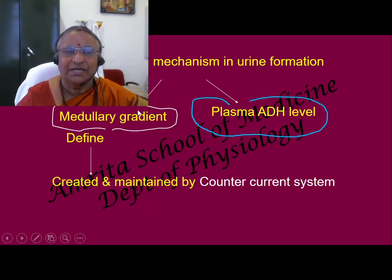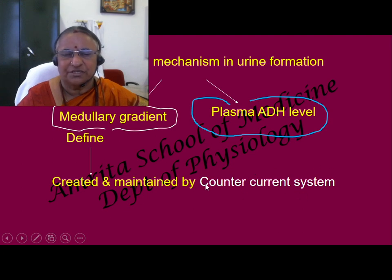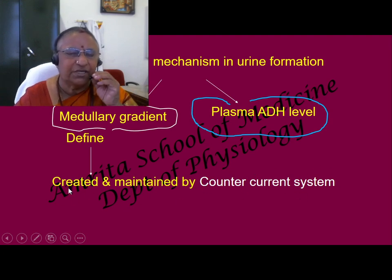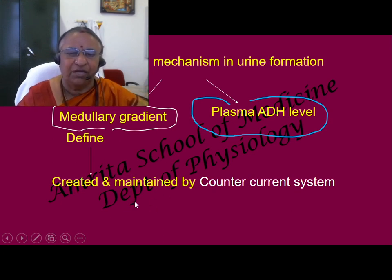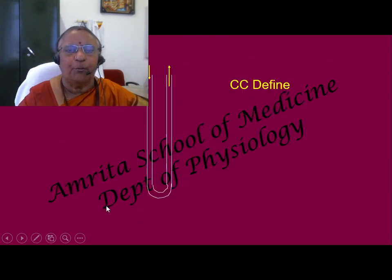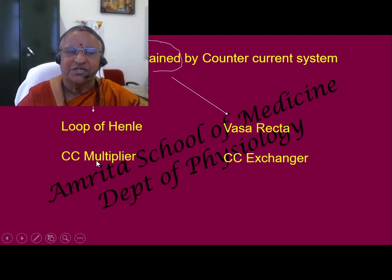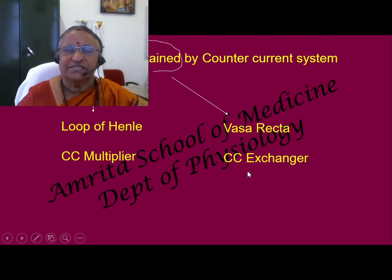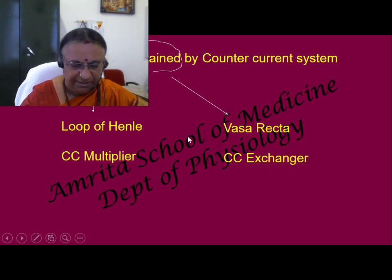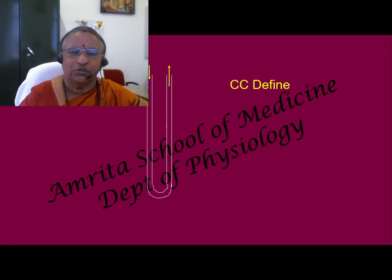This renal medullary gradient is created and maintained by what is called the counter current system. It is created by the counter current system of the loop of Henle and maintained by the vasa recta. So the loop of Henle and the vasa recta are the two components of the counter current system — the loop of Henle being called the counter current multiplier, and the vasa recta being called the counter current exchanger. We will see by the time we finish describing this why the loop is called the creator and why the vasa recta is called the exchanger. But first, let us see what this counter current system is.